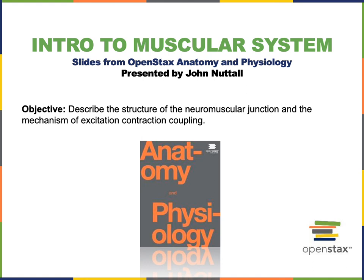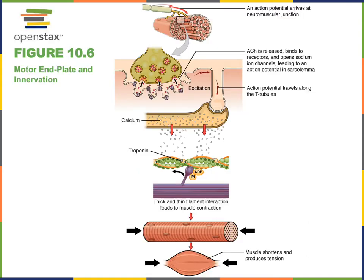In this video I will describe the structure of the neuromuscular junction and the mechanism of excitation-contraction coupling. The neuromuscular junction is a synapse between a somatic motor neuron and a skeletal muscle fiber.